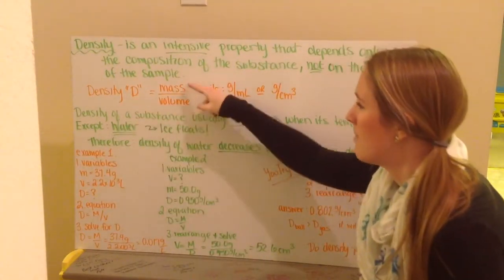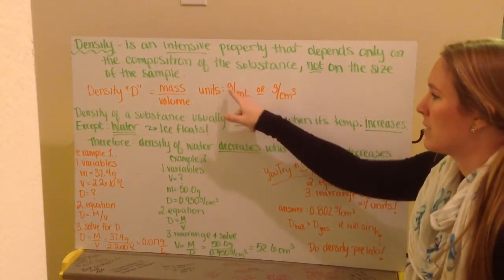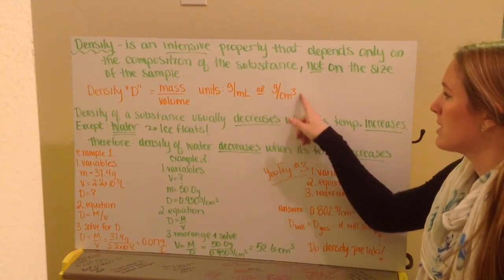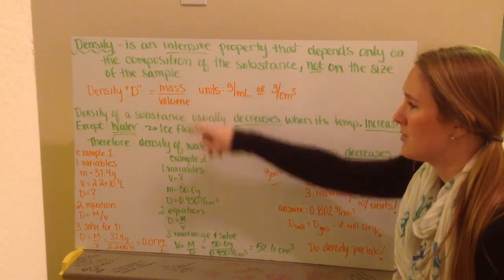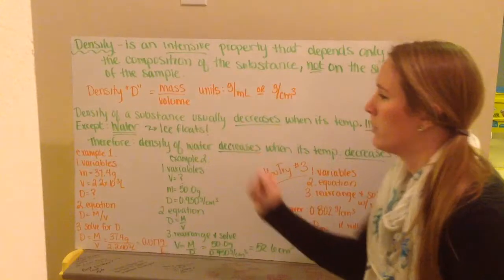Density is equal to the mass divided by volume. The units on density are usually grams per milliliter or grams per centimeters cubed because one centimeter cubed is equal to a milliliter. So density is just mass over volume. We abbreviate it as d equals m over v.